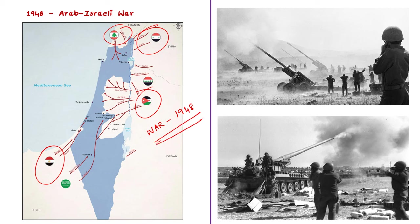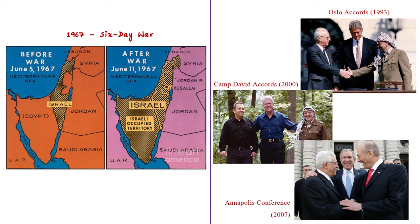In this 1948 war, Israel won and occupied more territories from surrounding regions. After this, the Israel-Palestine conflict was marked by numerous wars, uprisings and negotiations over the years. Another important war happened in 1967, also known as the Six-Day War.